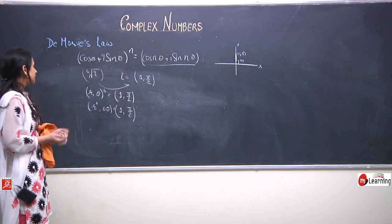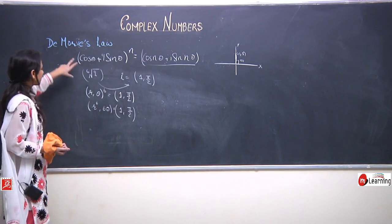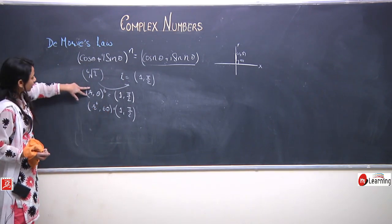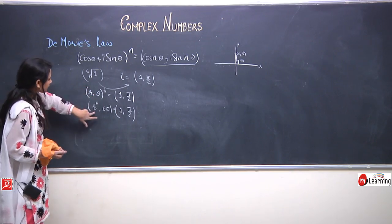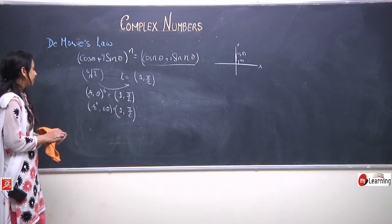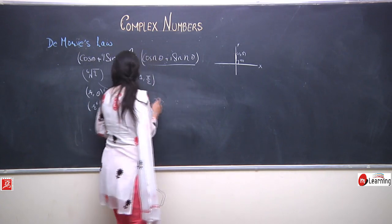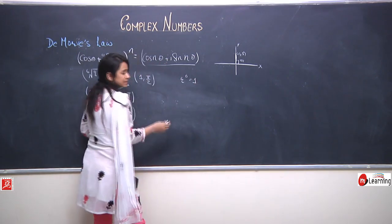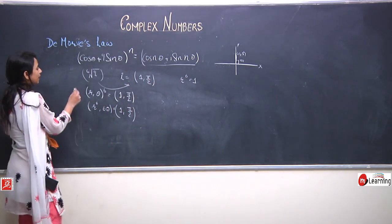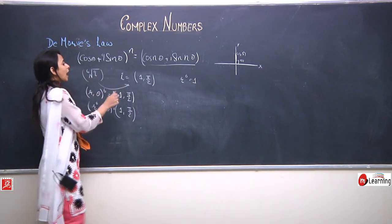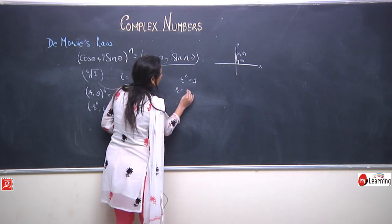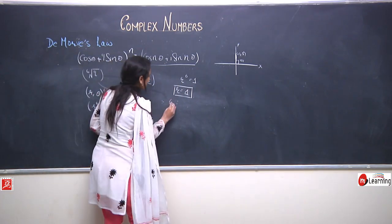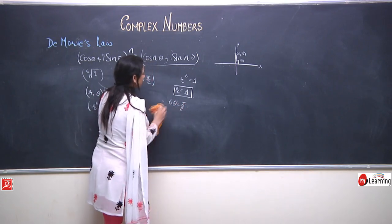In polar coordinates, r comma theta to the power 6 equals r to the power 6, comma 6 theta. This equals (1, pi by 2). When we multiply n factors of a complex number, we multiply their moduli and add their arguments. So we get r to the power 6 equals 1 and 6 theta equals pi by 2. Since r must be positive in polar coordinates, r equals 1.